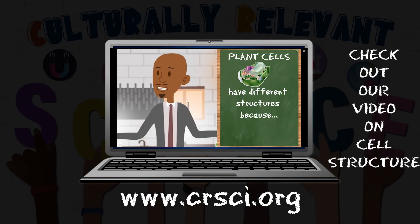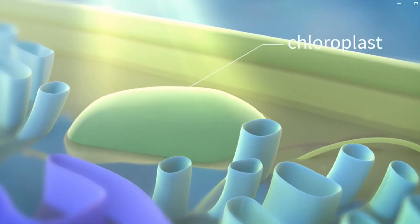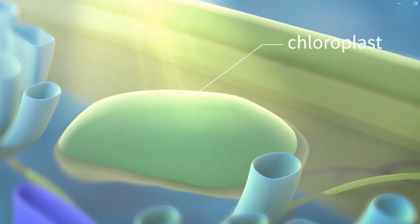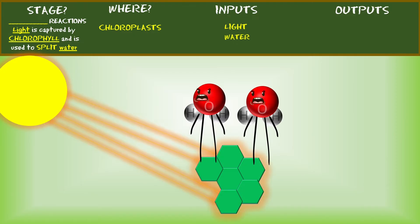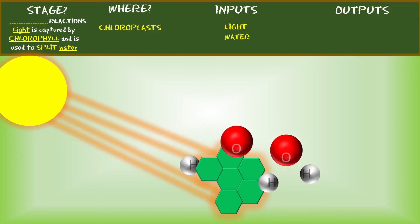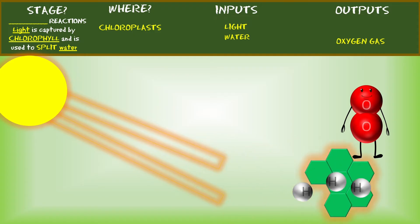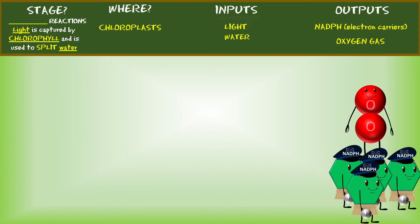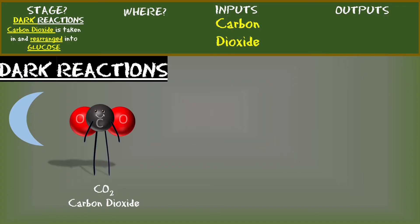Where does all of this happen? Think about the structure that plants have that animals don't — it must be there, right. Oh, the chloroplasts! Absolutely. Light is captured by a pigment called chlorophyll, and that energy from light is used to split water — this is where the oxygen comes from that plants give us. Most importantly, electron carriers called NADPH are made. Since this process requires light, we call these the light reactions.